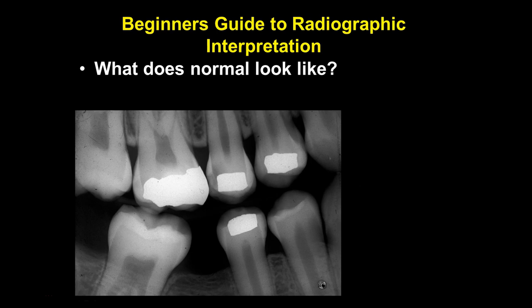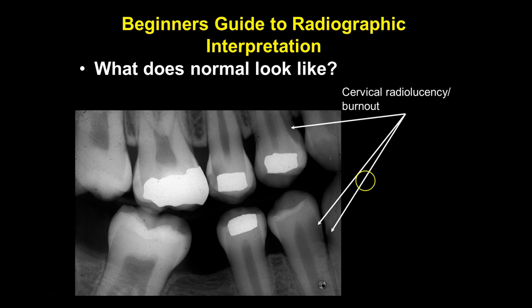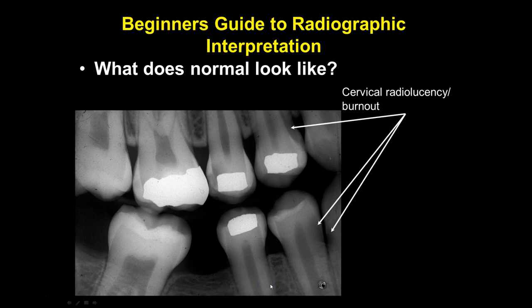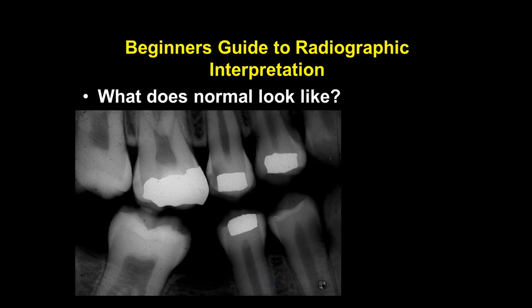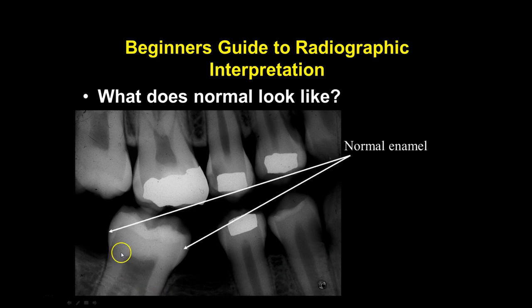I may need to break this presentation into parts due to upload limitations. Now, cervical radiolucency burnout — the area of the tooth at the cervical region is anatomically thinner than the rest, near the DEJ. Because it's thinner, radiation penetrates more easily and generates a more lucent image compared to the thicker, more opaque areas.